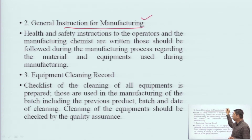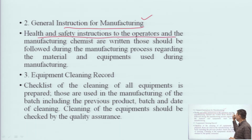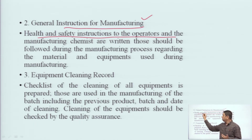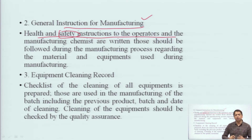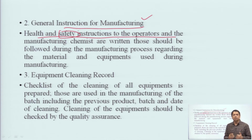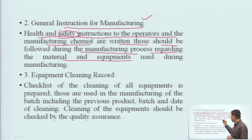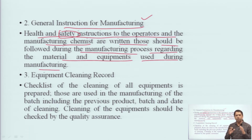The second part is the General Instructions for Manufacturing. This includes health and safety instructions to the operators. Sometimes very complicated procedures are involved in making a batch, and due to those complicated procedures, chemicals, or equipment, health and safety issues can be very important. These are properly documented here — what health and safety instructions are given to the operators and manufacturing chemists, which should be followed during the manufacturing process regarding materials and equipment used.